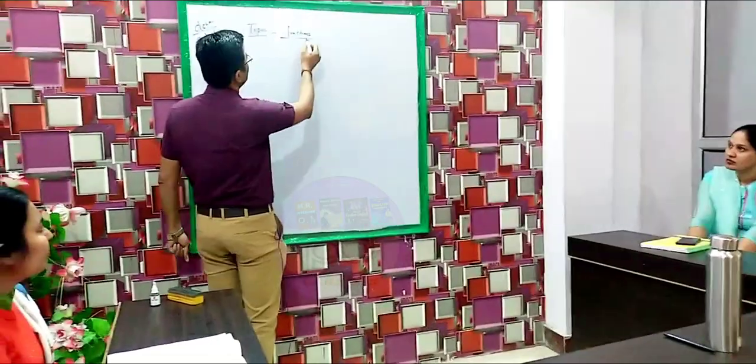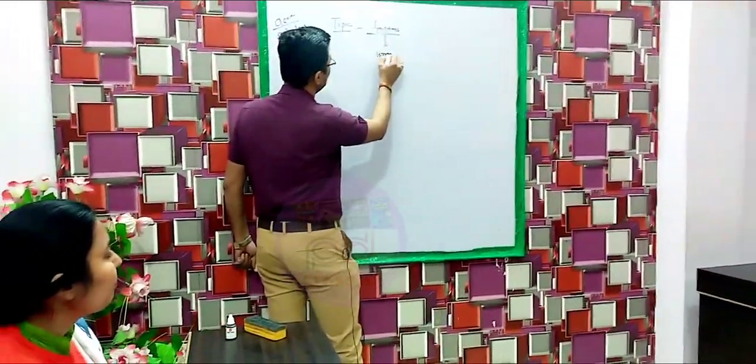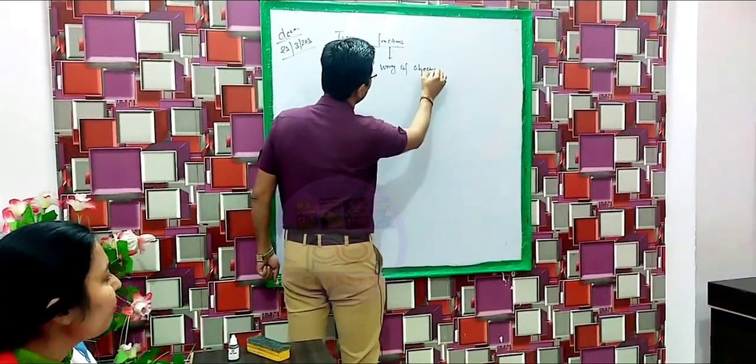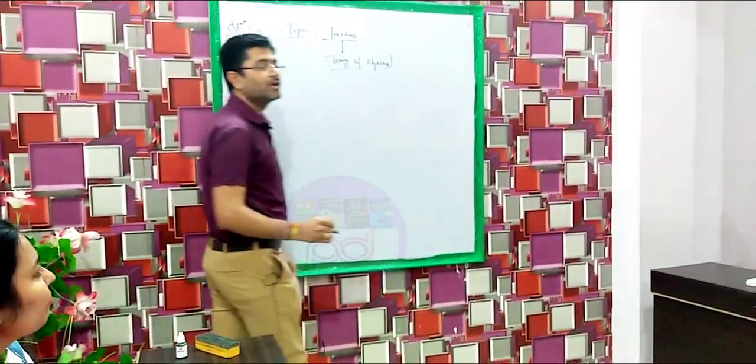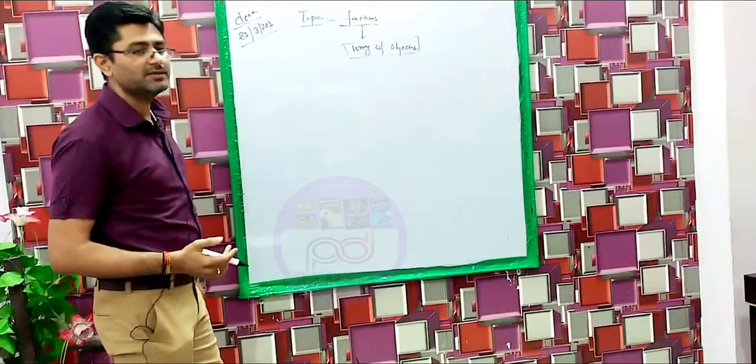So function identifies the working of object. What is the working of objects? This is identified by the function of the class. So every class must have properties and must have functions.